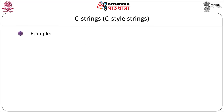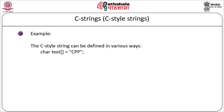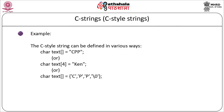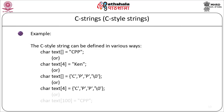The C-style string can be defined in various ways: char text[] = "CPP", or char name[4] = "KEN", or using individual characters inside curly braces such as {'C','P','P','\0'}, or char str[4] = {'C','P','P','\0'}, or char text[100] = "CPP". Any one valid notation is allowed in C++ programming.